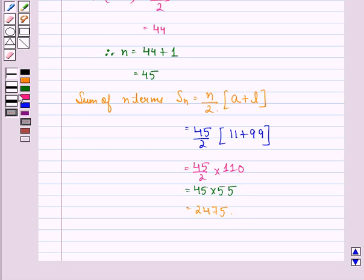So, our answer to this question is that the sum of all two digit odd positive numbers is 2475. I hope that you understood the solution. Have a good day.